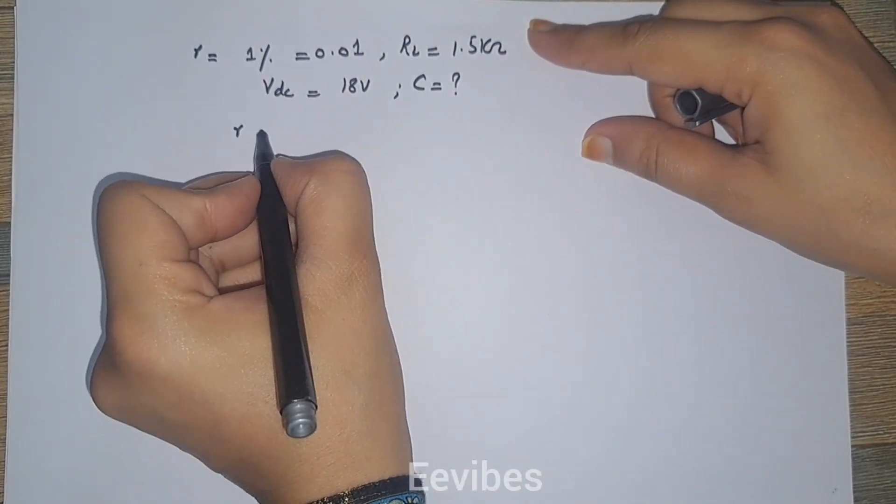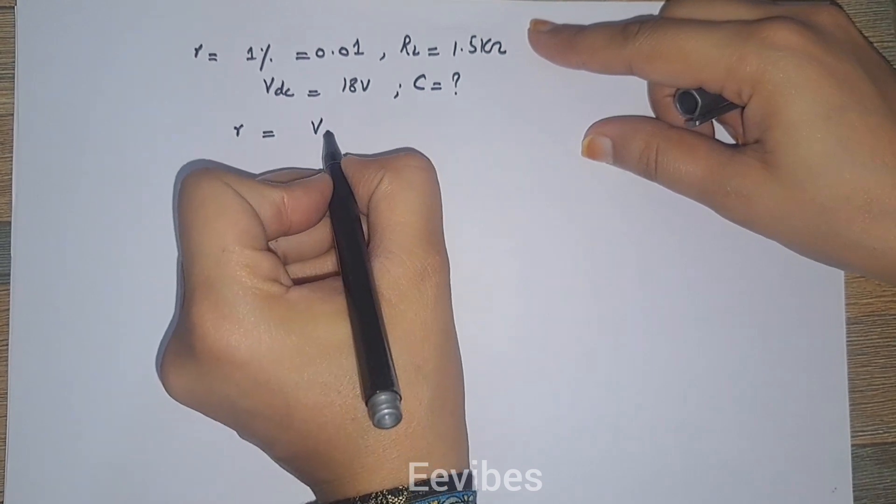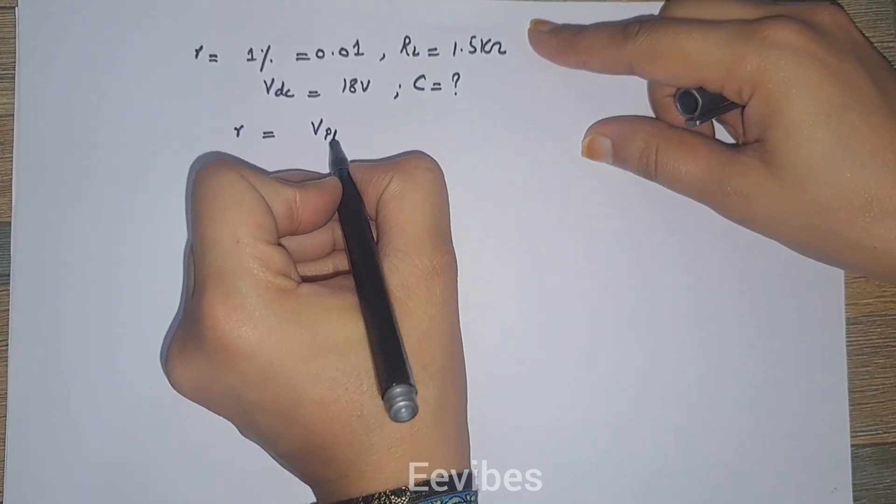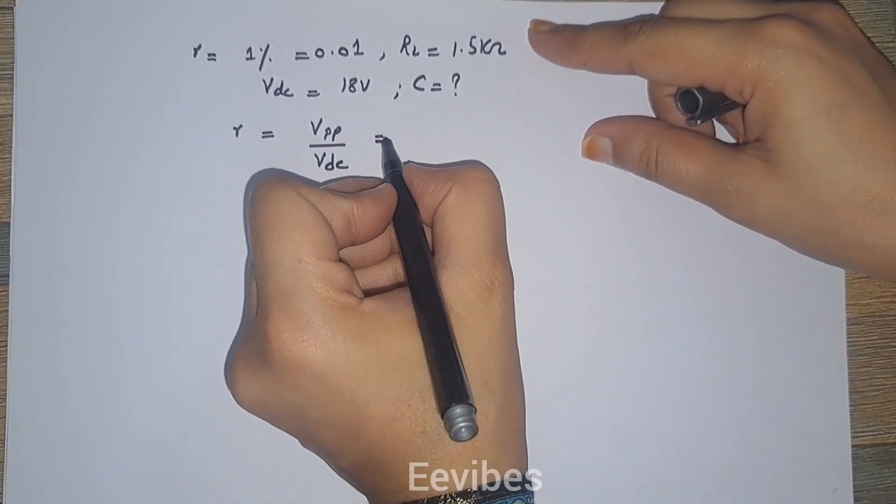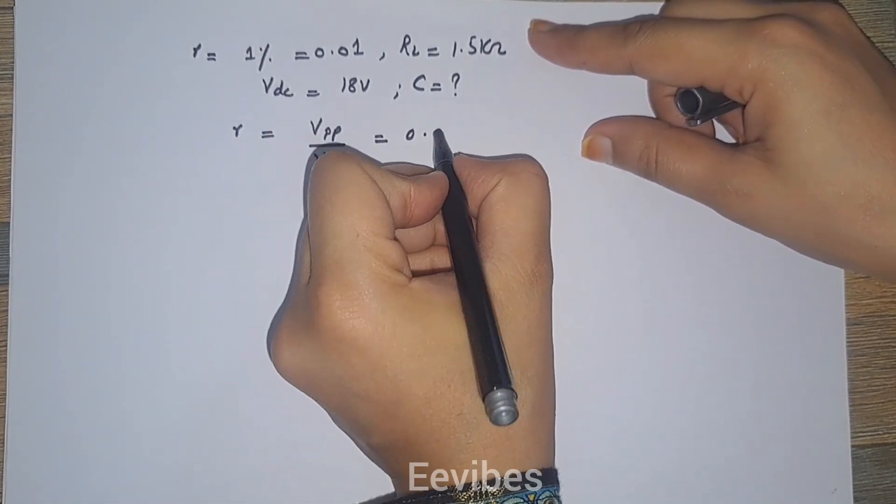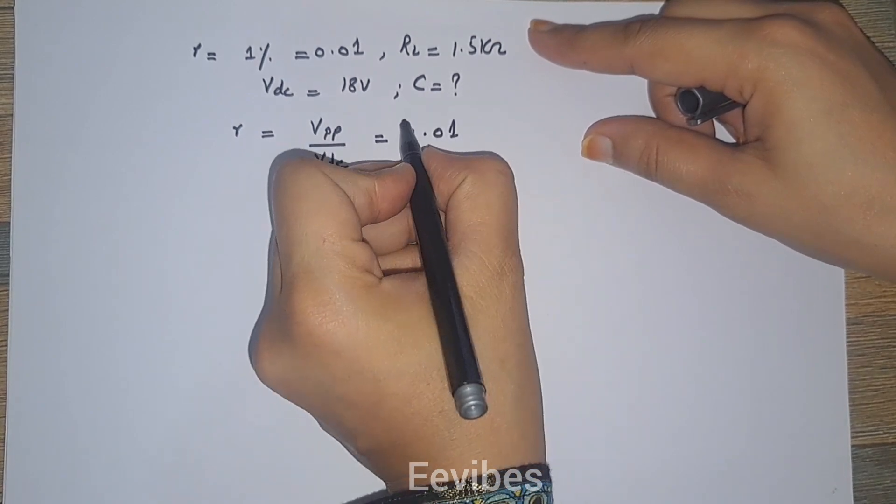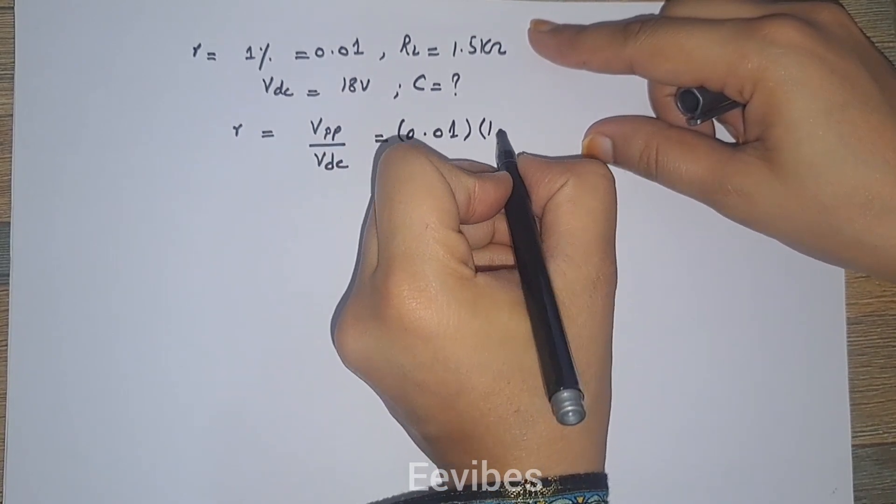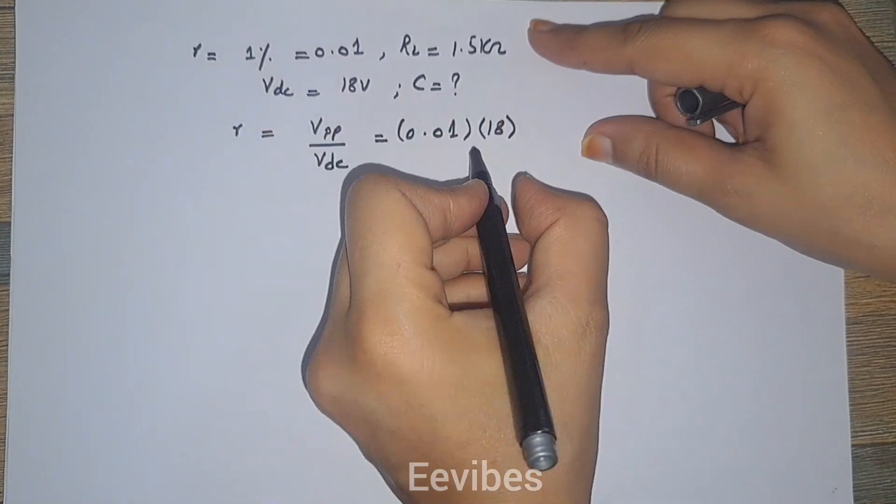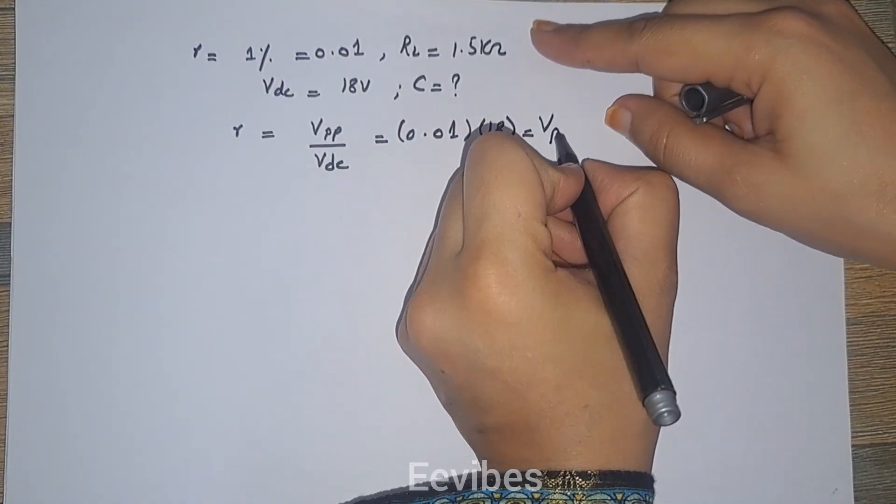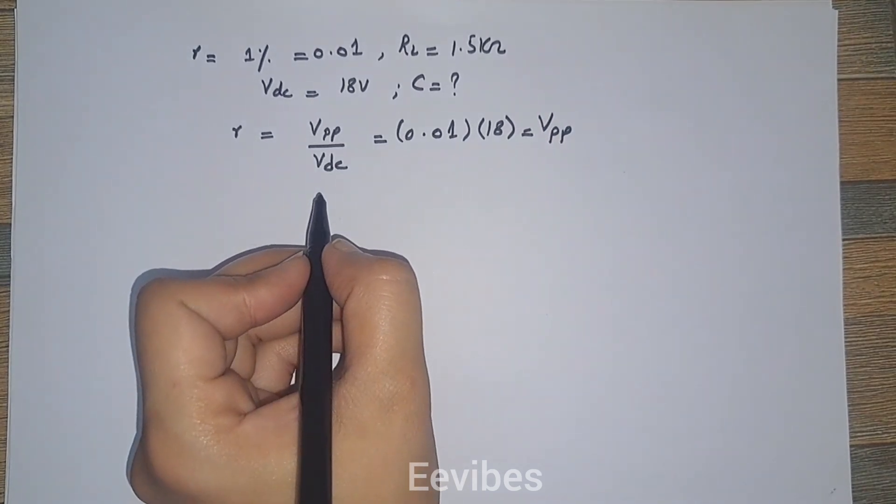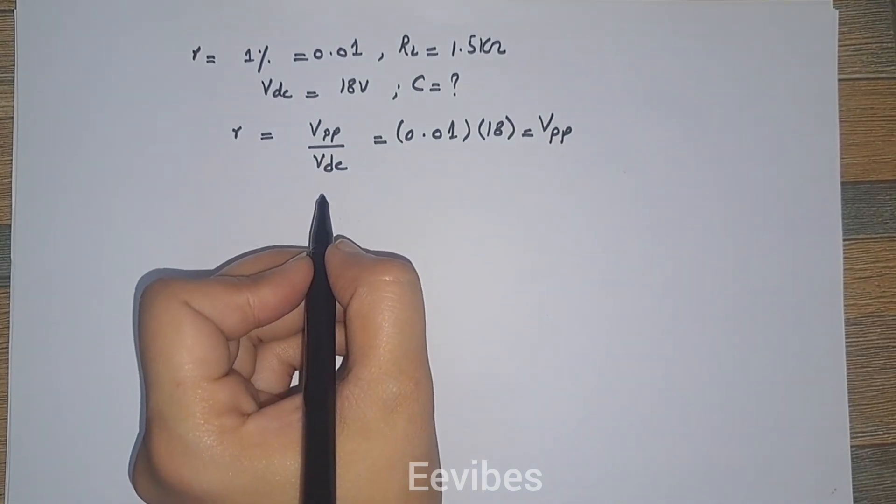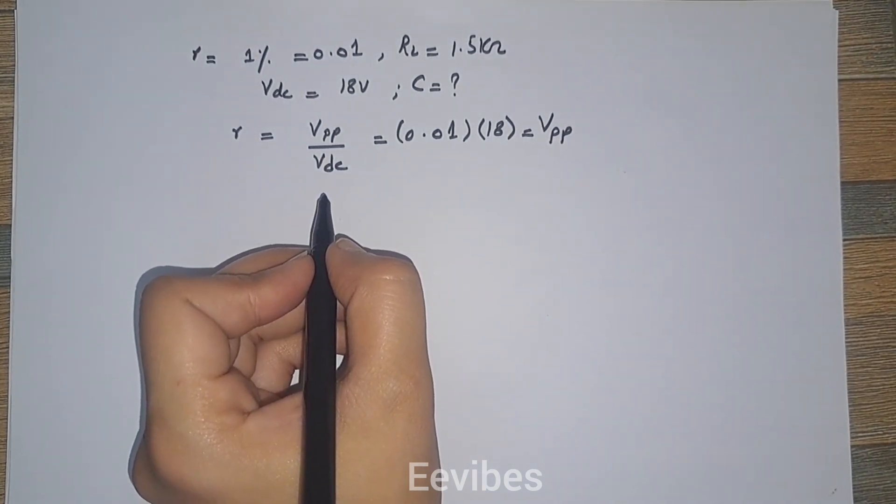We know that the ripple factor is equal to V peak to peak divided by VDC. So the ripple factor, which is 0.01, into VDC. VDC is equal to 18 volts in this case, and you will get V peak to peak voltage. When you multiply 18 by 0.01, you are going to get 0.18 volts for V peak to peak.